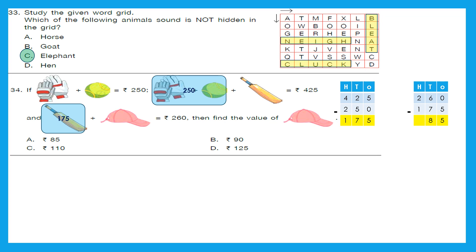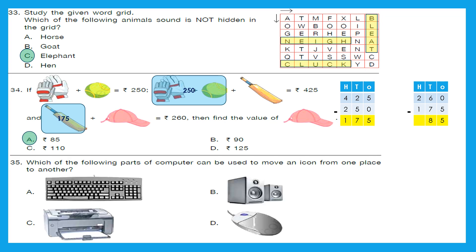Question 35: Which part of a computer can be used to move an icon from one place to another? That's the easiest one — we do that with the help of a mouse. Option C is the right answer. And with that we have successfully solved the 2021 question paper for Class 2 General Knowledge Olympiad.